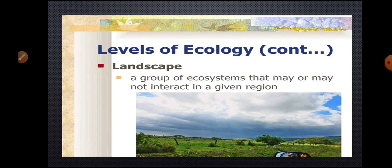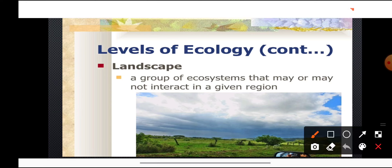The next level of ecological hierarchy is the landscape. A landscape is a group of ecosystems that may or may not interact. Sometimes in a geographical area we find forest areas, desert areas, and grasslands together — this group of ecosystems is called a landscape. They may or may not interact with each other.